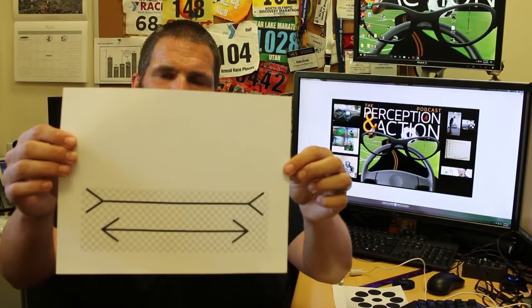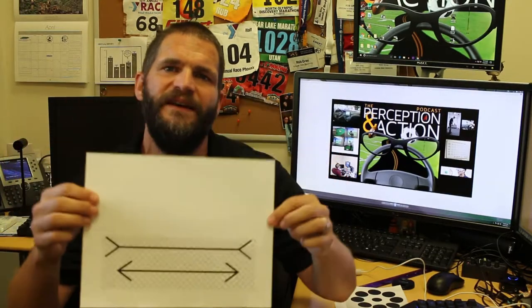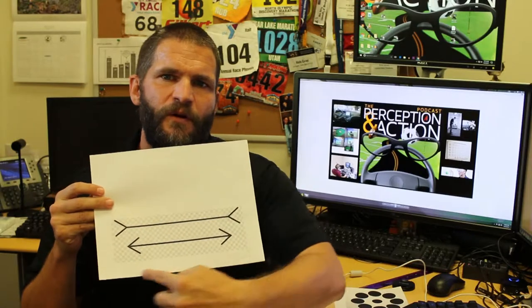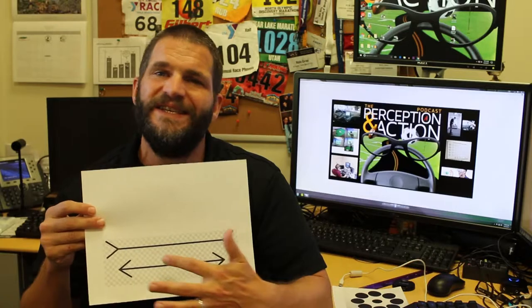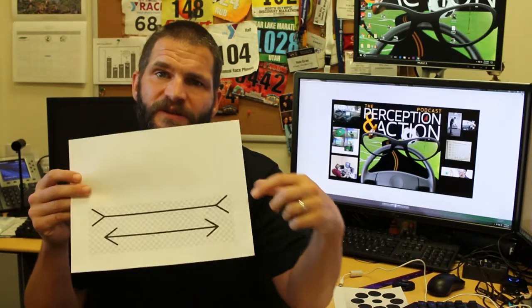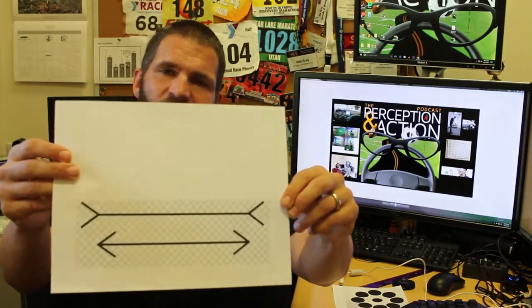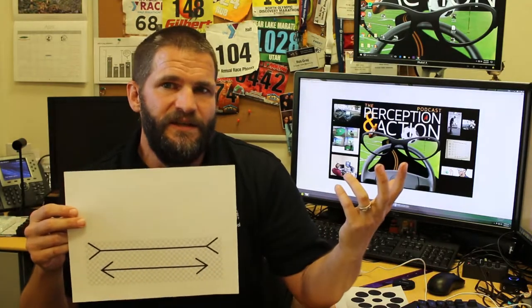Here's one of the most famous examples. This is the well-known Muller-Lyer illusion. We have two horizontal lines with different configurations of arrows on the ends. The actual horizontal parts of these lines are the same length, but most people perceive the top line as being much longer than the bottom line. And that's the illusion.